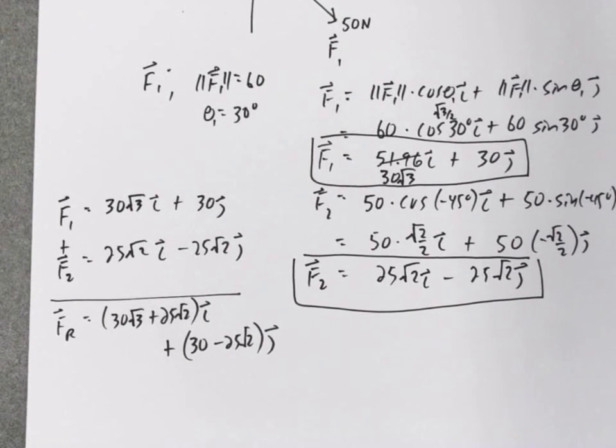So that's pretty much how you attack that kind of a problem. And I'm just checking, and this is, in fact, the correct answer. So you have to convert your vectors in the I, J form, and then you can add them.